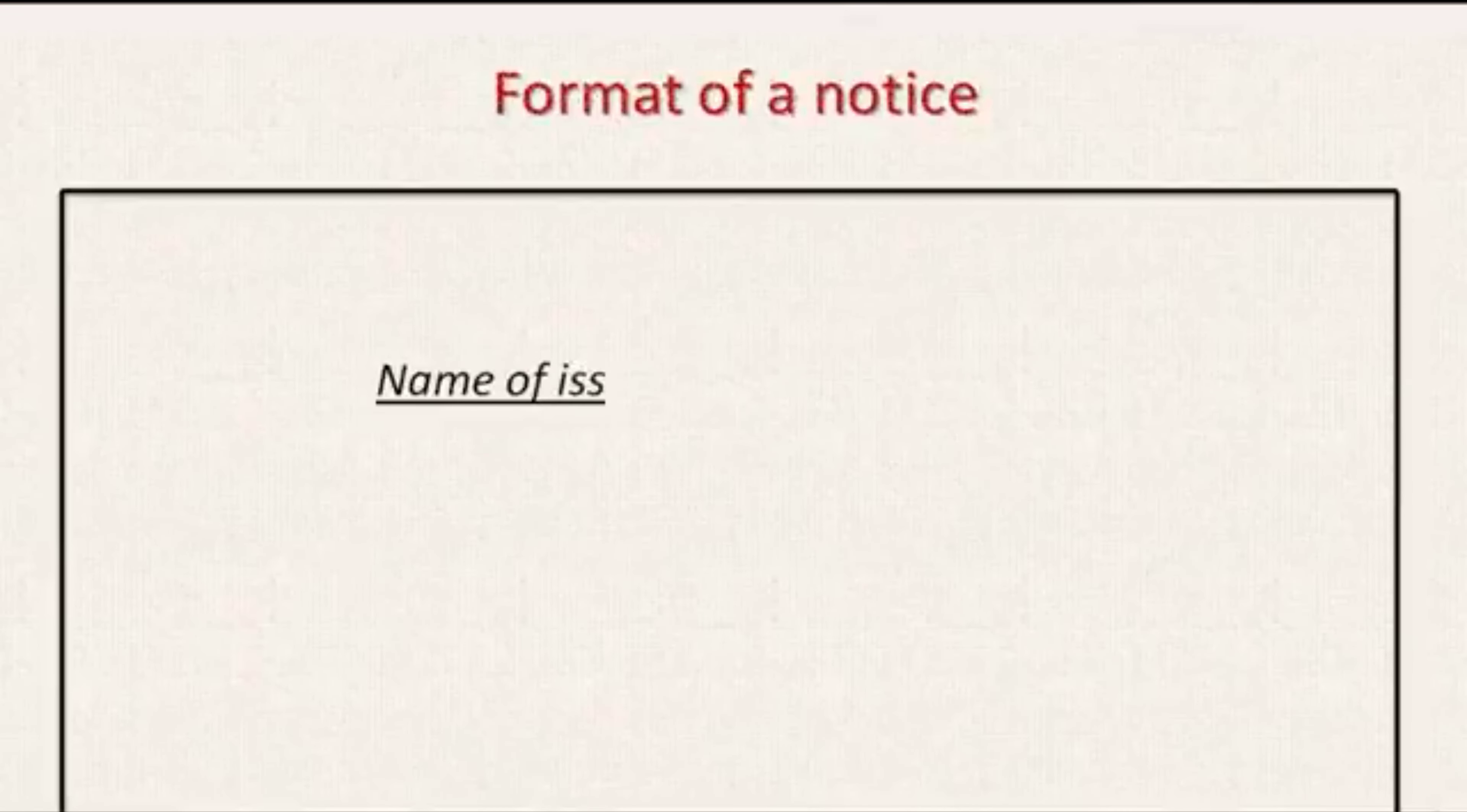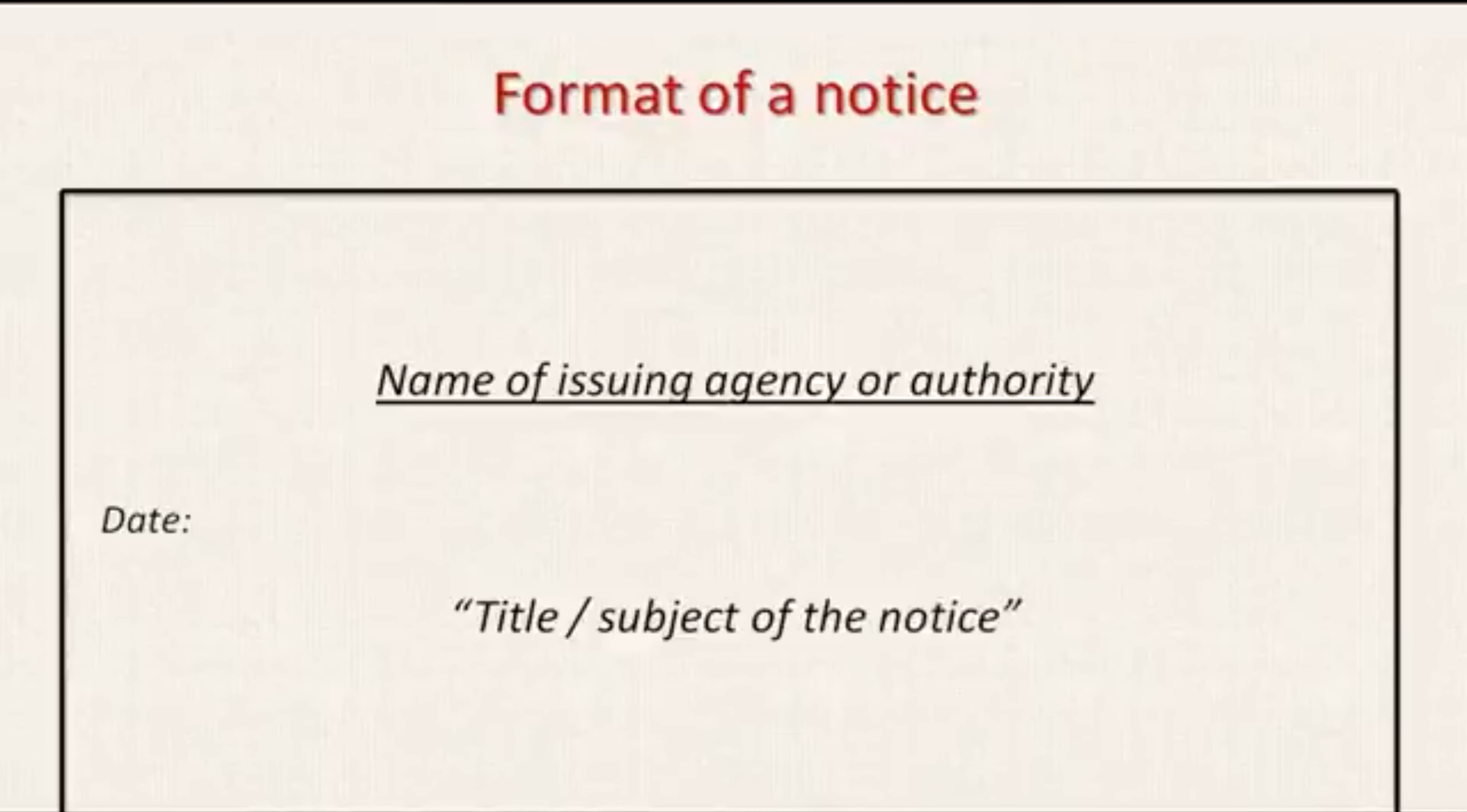Here is the format of a notice. In the center on the top you will give the name of the issuing agency or authority like any institution from where the notice is being published. Then, at the side you will write the date. Further down in the center you will give it a title or a subject to the notice.